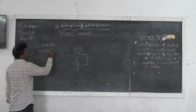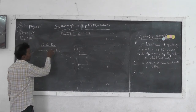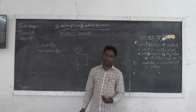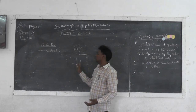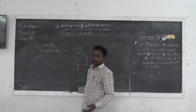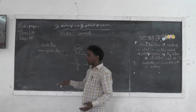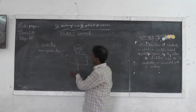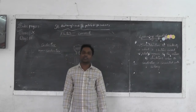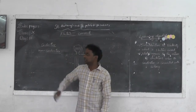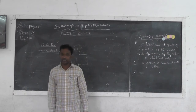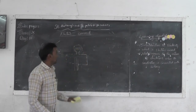Conductor means the material which allows electrical energy to pass from the source to the bulb. Here, the source is the battery. The material which does not allow electrical energy to pass from the battery to the electric bulb is called a non-conductor. The other name for non-conductors is insulators. Insulators do not allow electric current to pass through them, but conductors do allow electric current to pass through them.